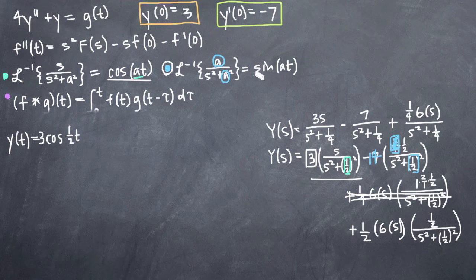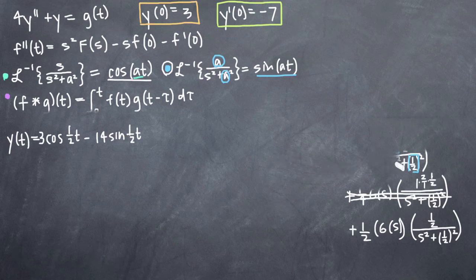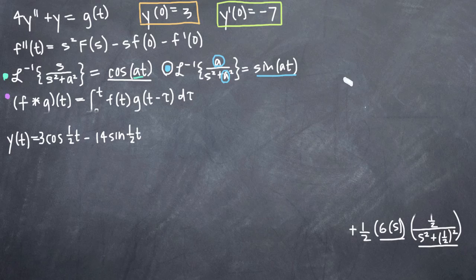Using our formula for sine of a·t, we can write the second term as minus 14 times sine of (1/2)t. For our last term, we need to use a convolution integral. We can't just take the inverse Laplace transform of each function individually and then multiply them together, even though the inverse Laplace transform of G(s) is g(t) and the inverse Laplace transform of the fraction would be sine of (1/2)t.